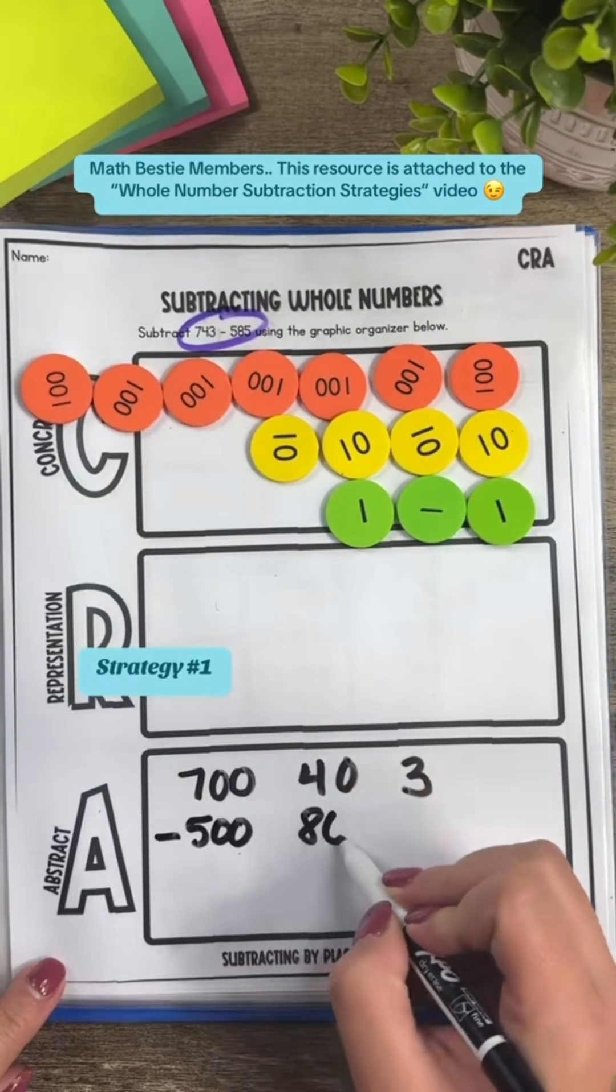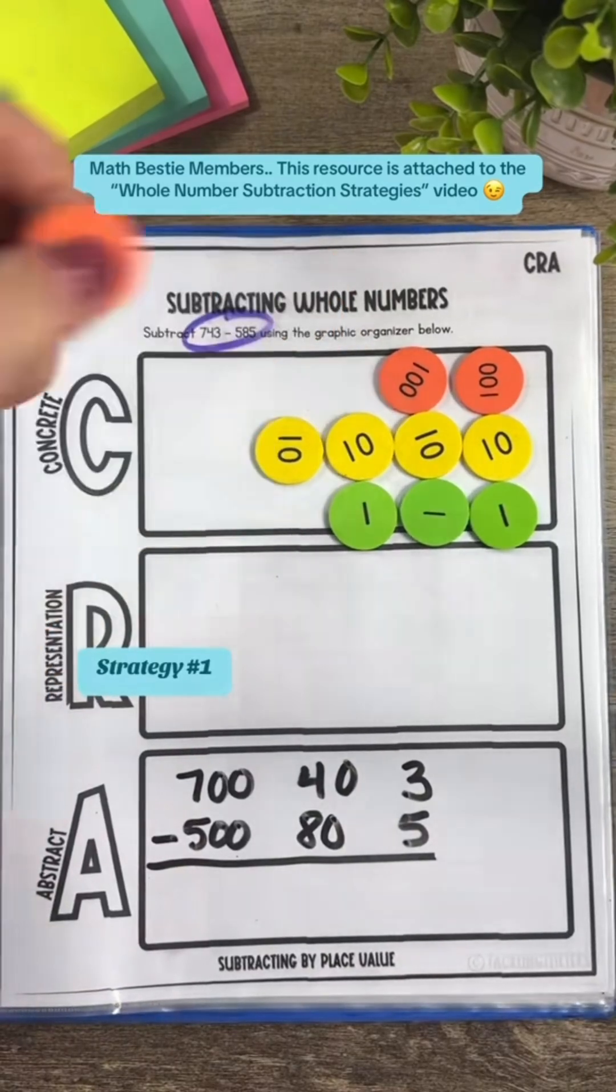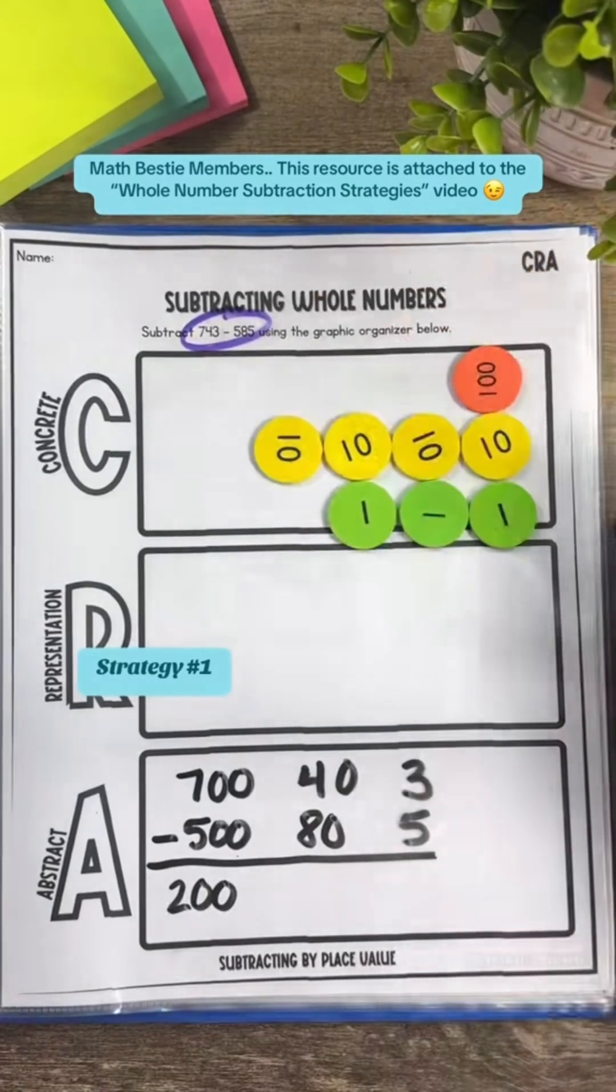Let's go crazy and start subtracting our hundreds first because a goal in math is flexible thinking. So I can go ahead and take away 500 and I do have 200 left over.